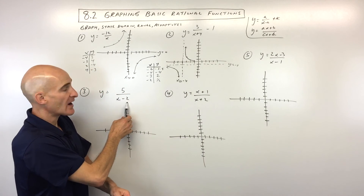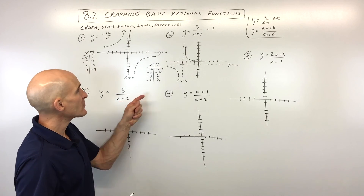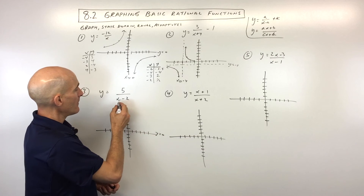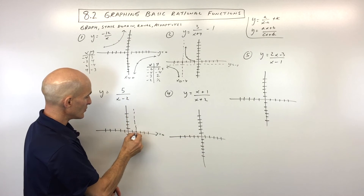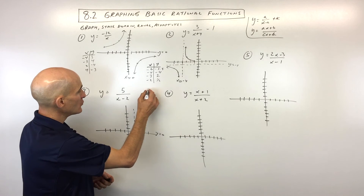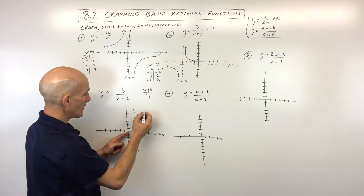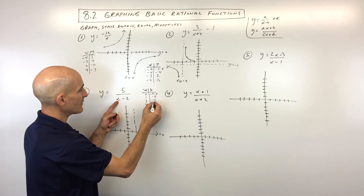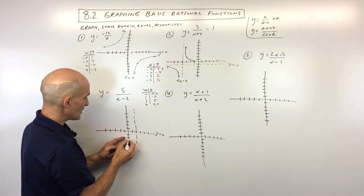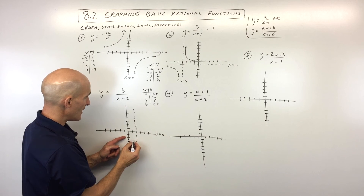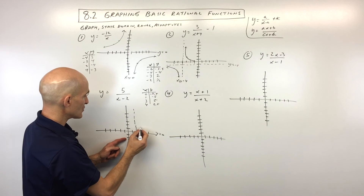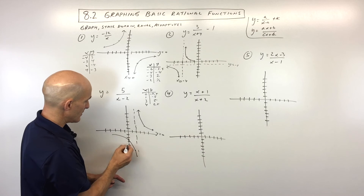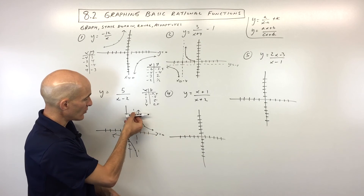For number 3, y equals 5 over x minus 2: there's no k value, so the horizontal asymptote is y equals 0, and the vertical asymptote is x equals 2. Using x = 0, 1, 3, 4: y values are -2.5, -5, 5, and 2.5. Domain is all real numbers except x cannot equal 2; range is all real numbers except y cannot equal 0.